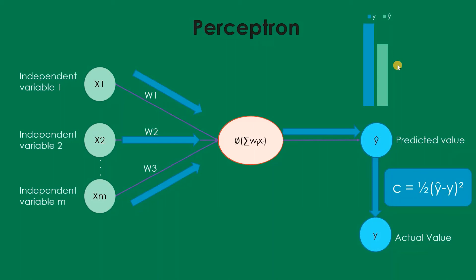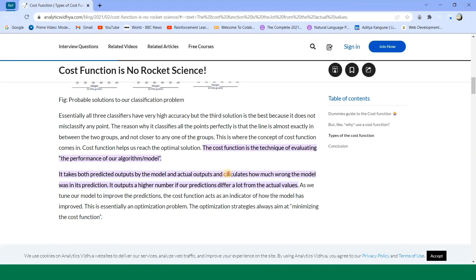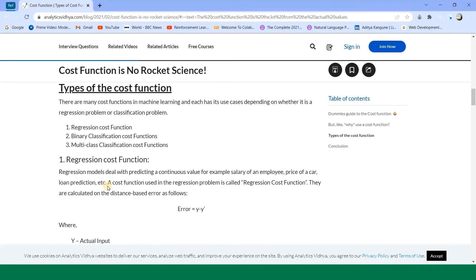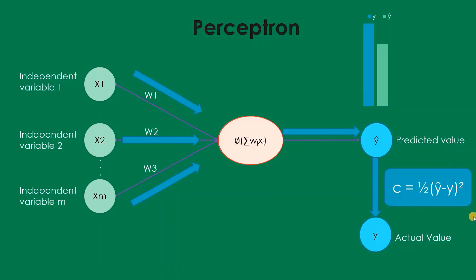That error is known as cost. One commonly used cost function is ½(y-hat − y)², and there are various types of cost functions. We can use the cost function to evaluate model performance — our target is to minimize it. There is mean error, mean squared error, and others. The lower the cost function, the closer y-hat will be to y. Basically, what we want is for y-hat to be as close as possible to the actual value of y.